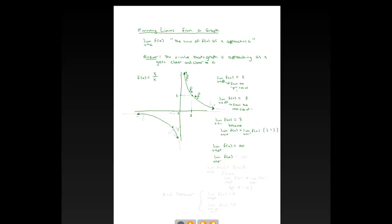Similarly, the limit as x goes to 0 from the left: a point below approaches zero from the left, staying on the graph. As it moves closer and closer to zero from the left, it's approaching negative infinity — very large negative y-values.